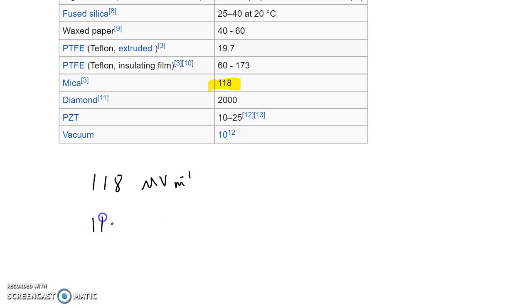If we take 118 megavolts per meter or 118 times 10 to the 6th volts per meter and multiply this out by the thickness that we're going to be applying it across, or one millimeter, then what we get is 118 times 10 to the 3rd volts, or 118 kilovolts.